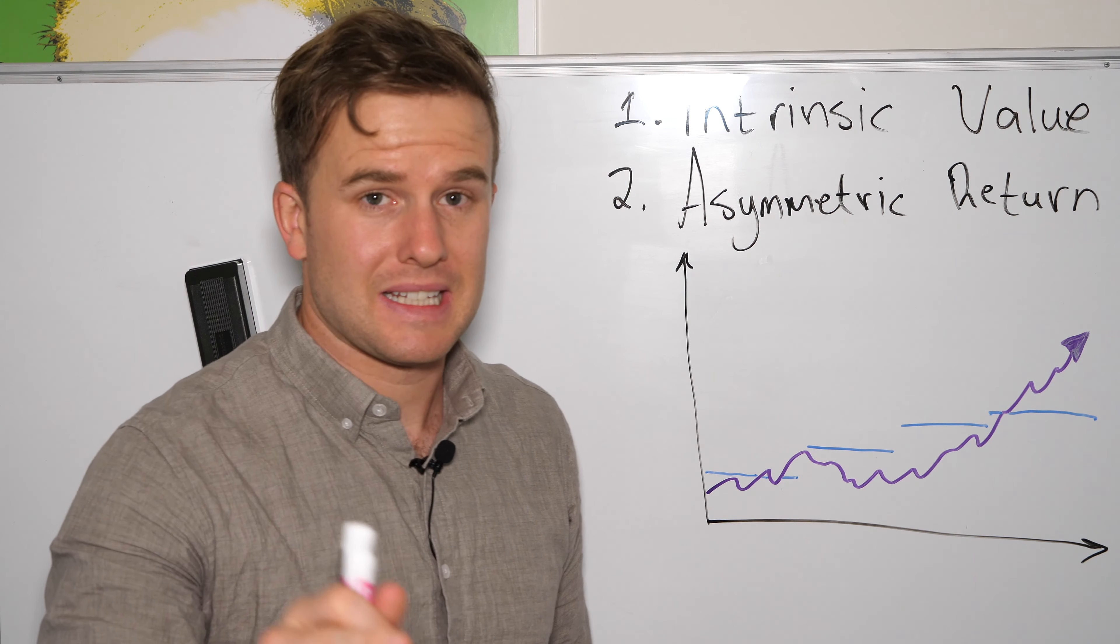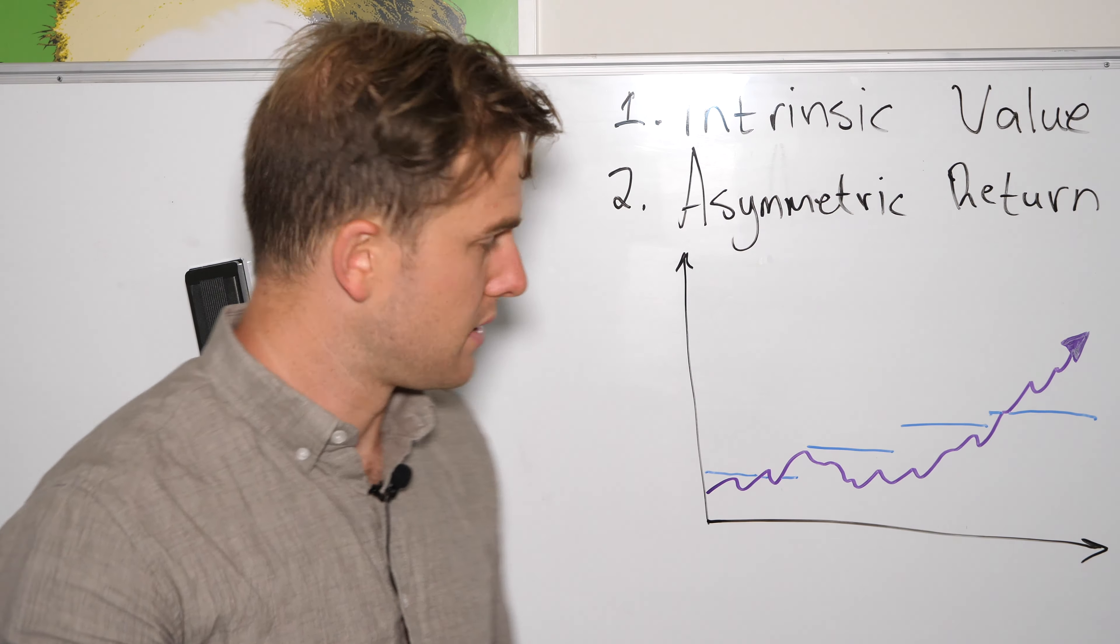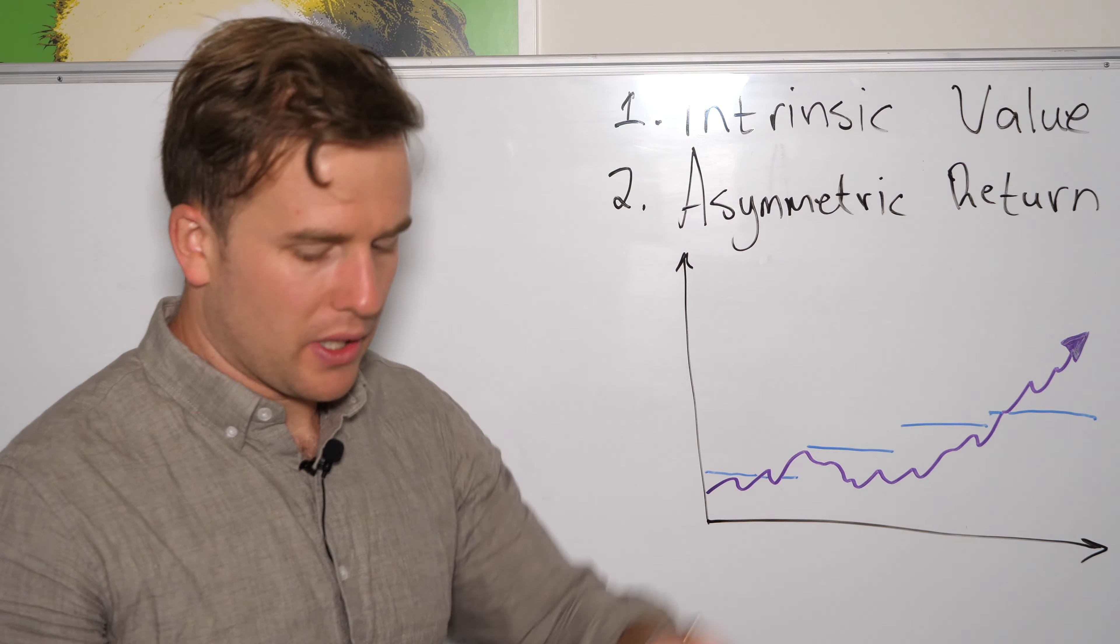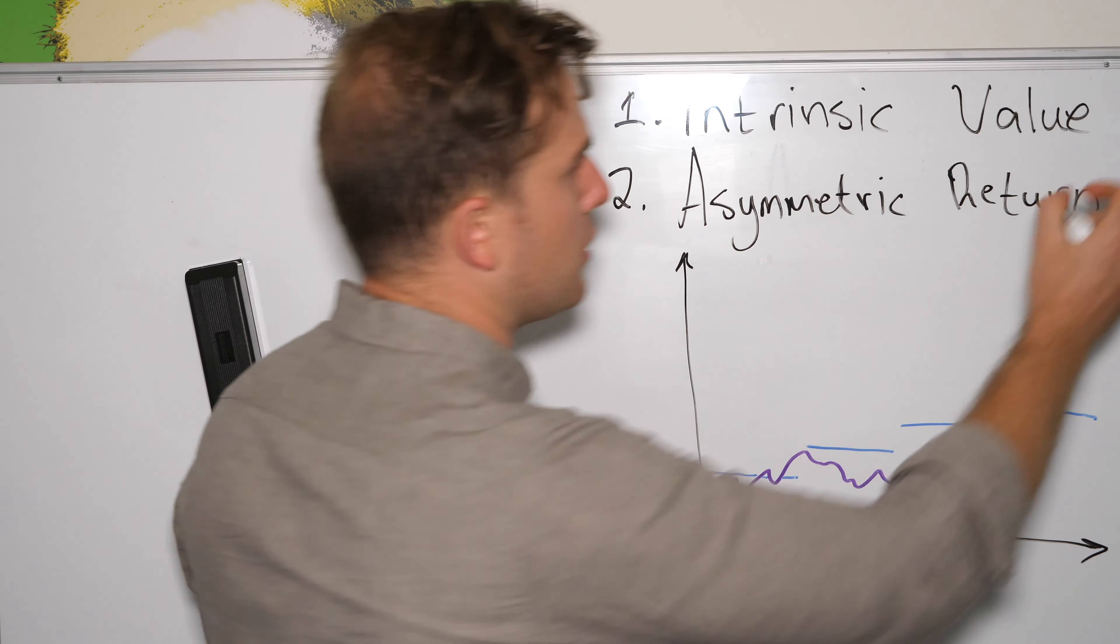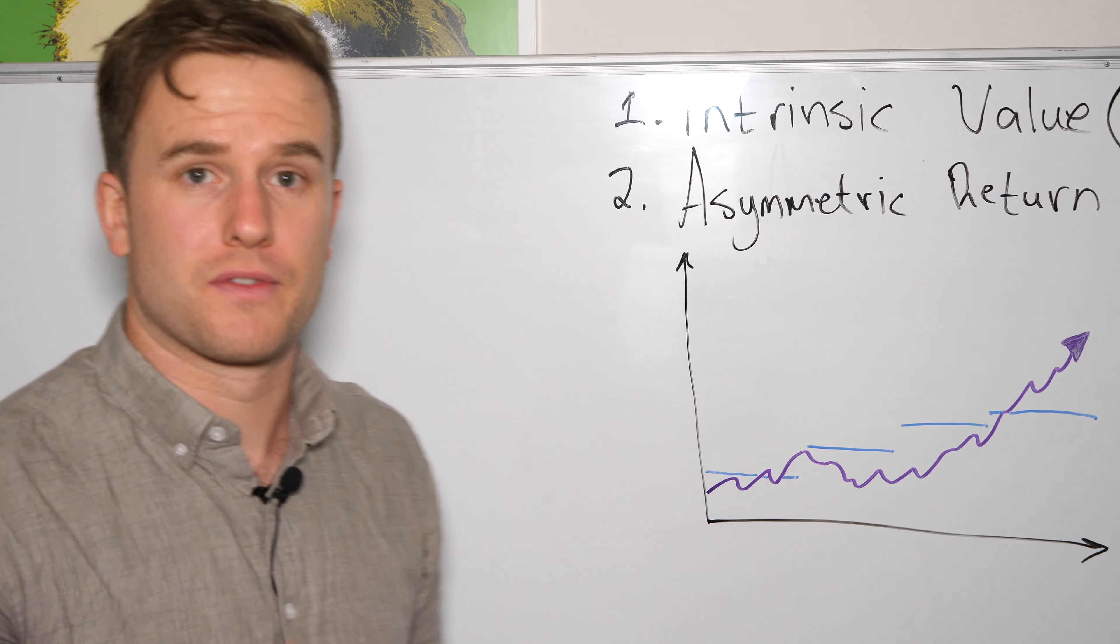Don't worry, they're very easy to understand concepts and I'm going to take you through them step by step so you understand everything there is to know. Okay, let's take them one by one. Intrinsic value. Intrinsic value is also called IV and basically what it represents is the worth of something.